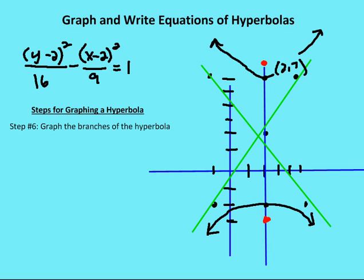Finally, I graph the branches of the hyperbola, knowing that (2, 6) and (2, negative 2) are the vertices of the branches of the hyperbola, and then I graph from there.